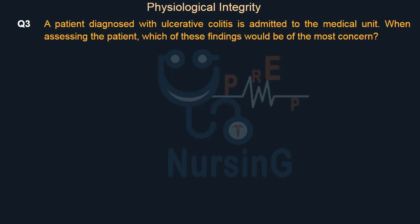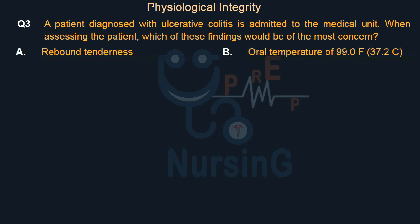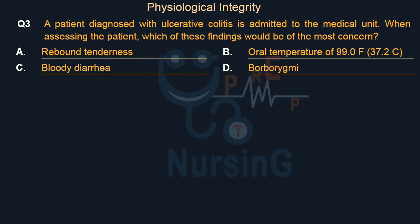A patient diagnosed with ulcerative colitis is admitted to the medical unit. When assessing the patient, which of these findings would be of the most concern? Option A: Rebound tenderness. Option B: Oral temperature of 99.0°F (37.2°C). Option C: Bloody diarrhea. Option D: Borborygmy.